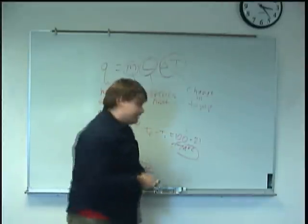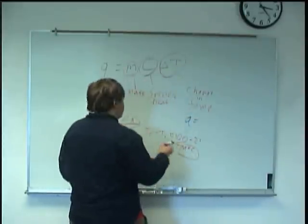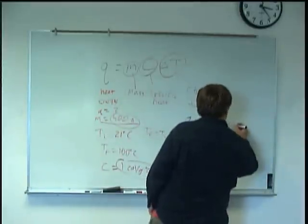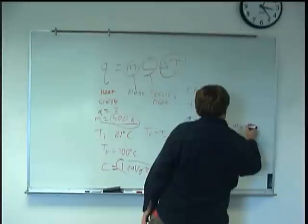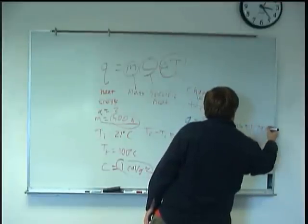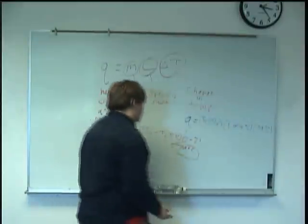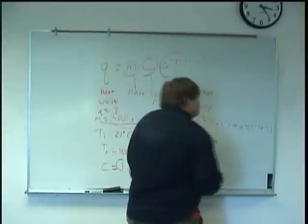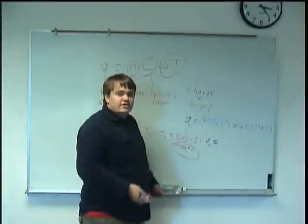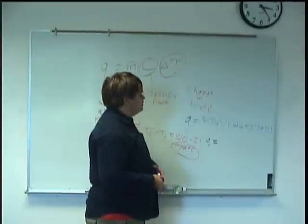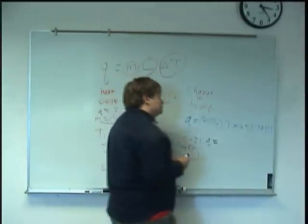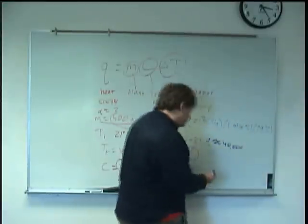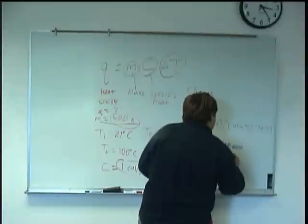Now if we put that all together, we have Q equals 500 grams times 1 calorie per gram degree C times 79 degrees C. And so we would just punch that into our calculator and we get a certain answer, which I can't quite do in my head off the top of my head at the moment. But if I were to guess, you get around 4,000 or 40,000 calories. 39,500. Specifically 39,500.